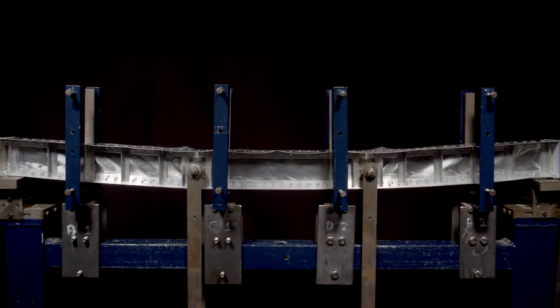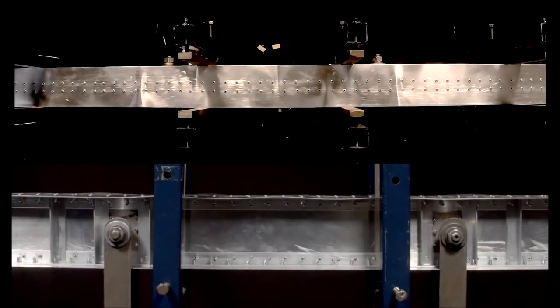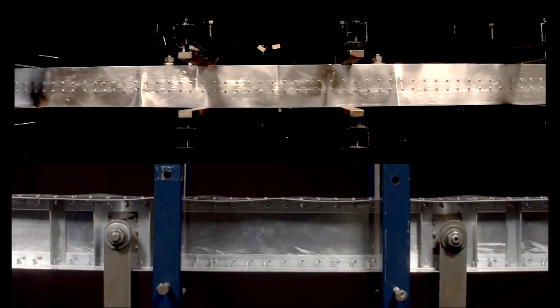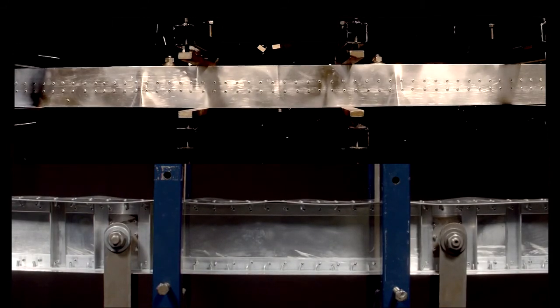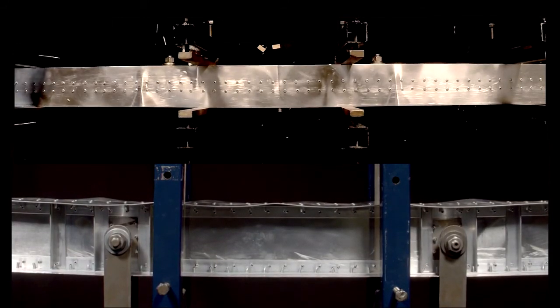These ripples reduce the beam stiffness, and deflections become higher. Now let's zoom in on the central portion and at the same time look down from above. You can see that the ripples are evenly distributed along the top of the flange.